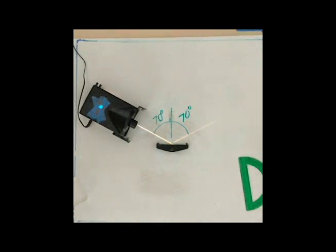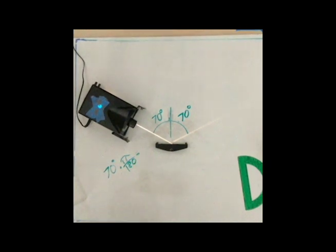The same rule applies when the incident ray is angled 70 degrees from the normal. The reflected ray is also measured to be 70 degrees, or 7 pi over 18 radians.